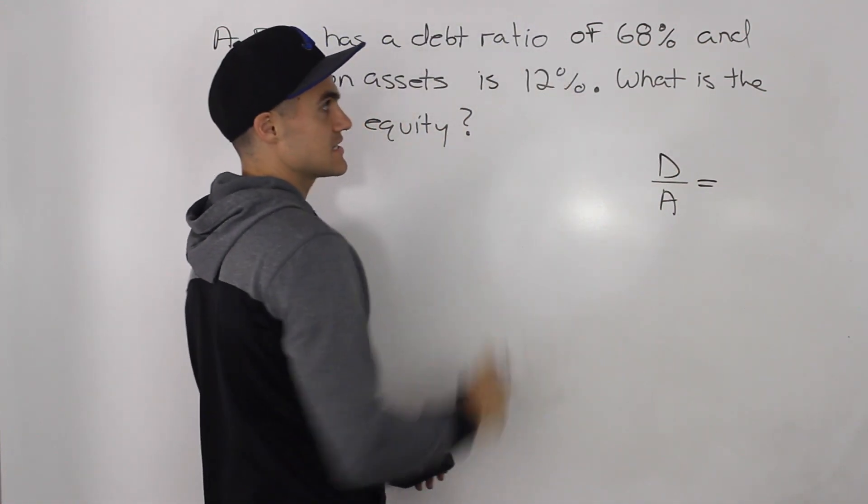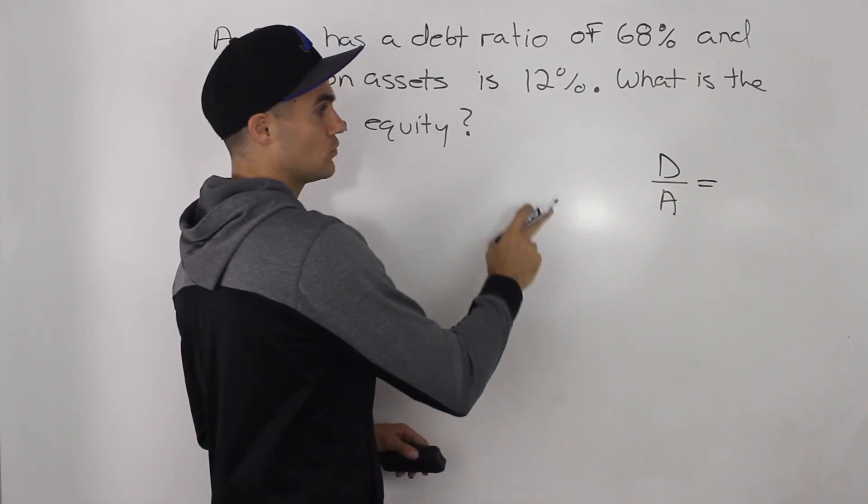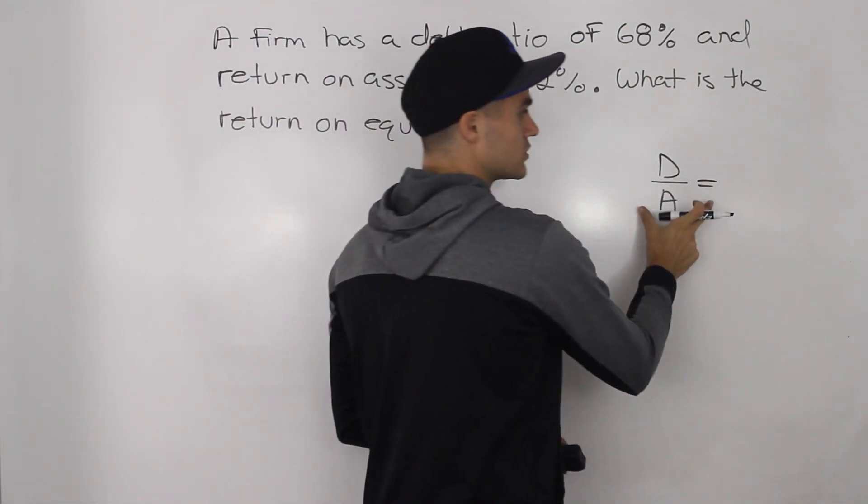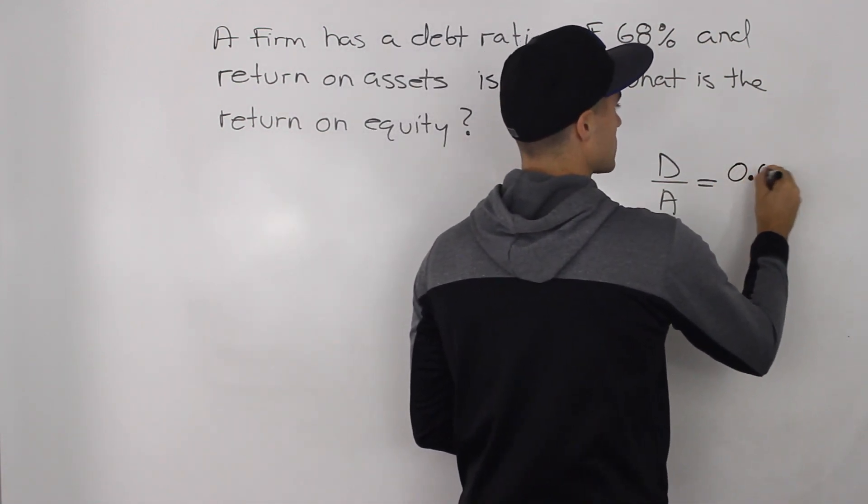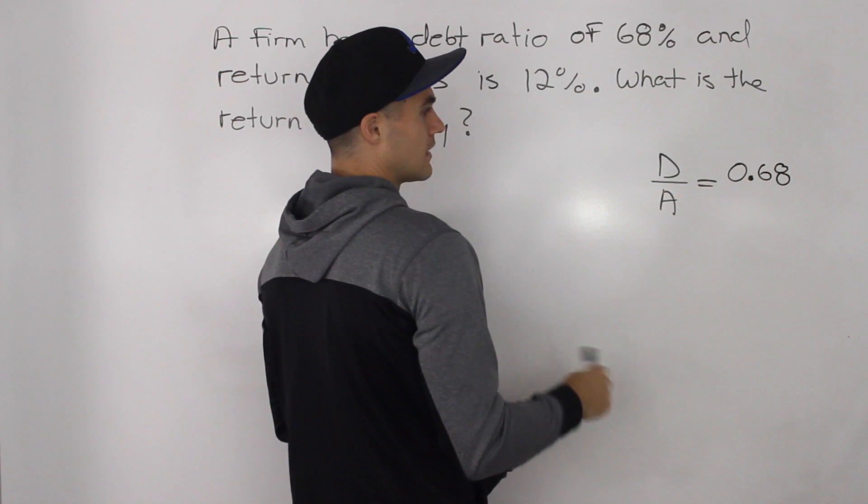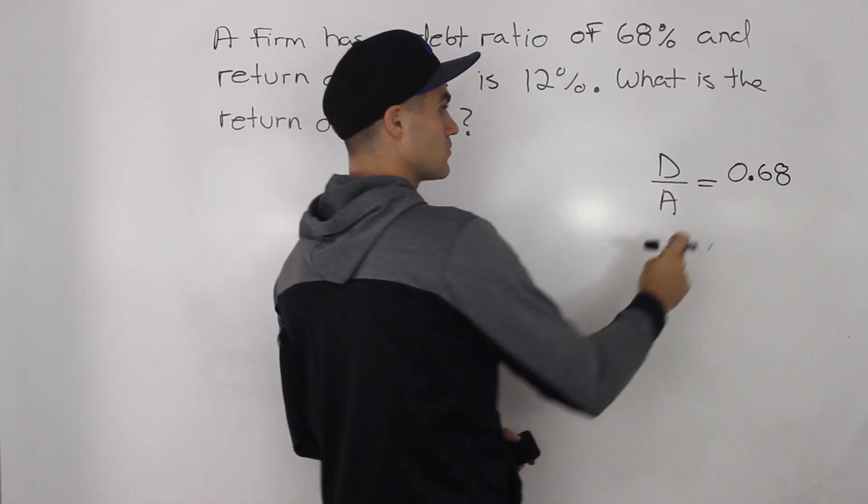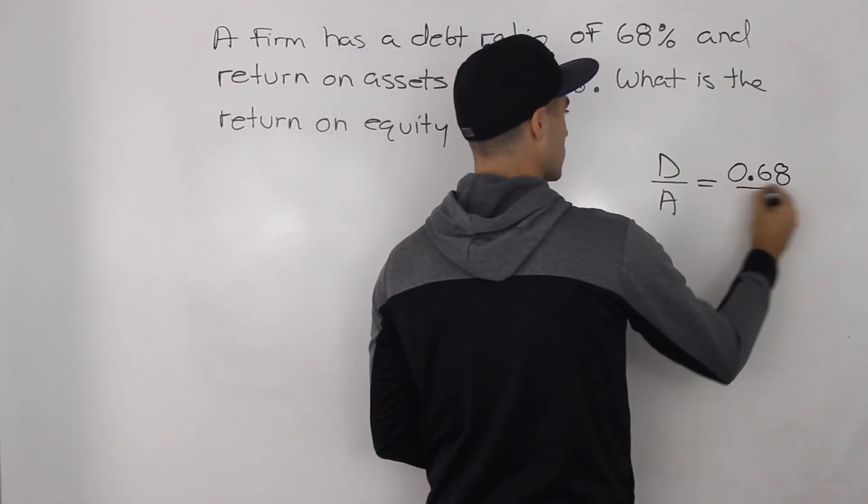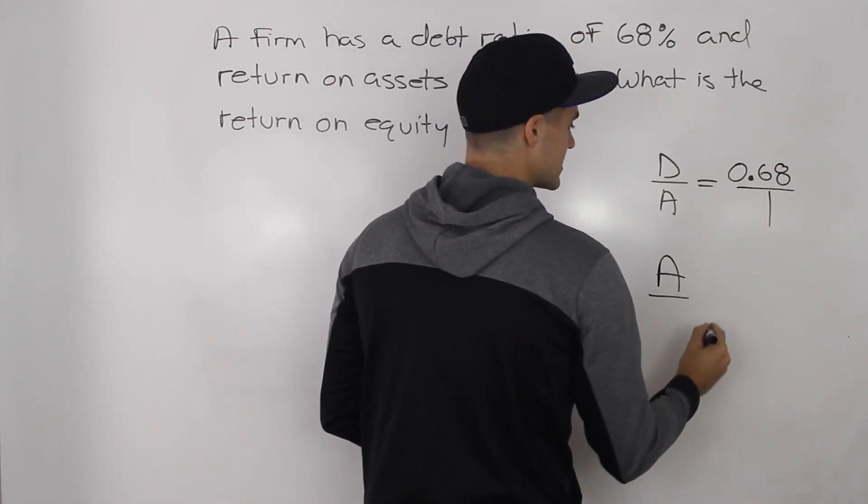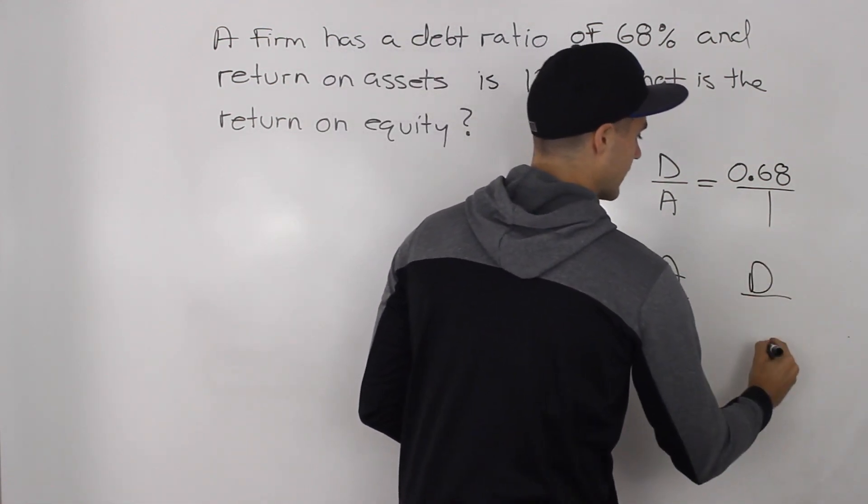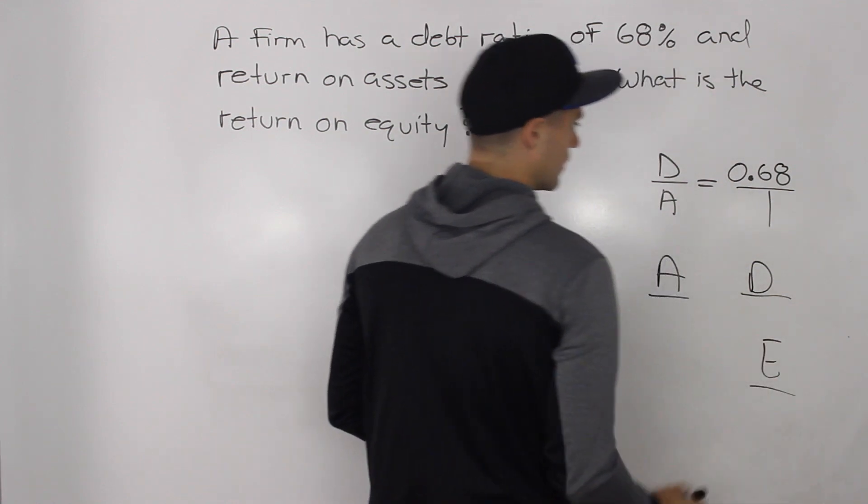That's equal to 68%. Now you want to take that 68% whenever you're dealing with ratios, you want to make sure it is in decimals. So 0.68. Now we're making the mini balance sheet. So what we have to do is we have to take this value, put it over one. And now we got assets on the left side, debt and equity. Well, the assets we know is one,